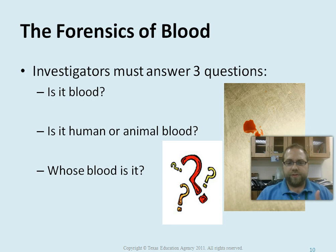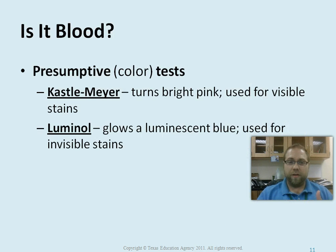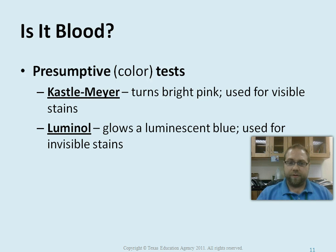For the forensics of blood, there are three questions to answer: Is it blood? Is it human or animal blood? And whose blood is it? For the first question, there are two tests. The Kastle-Meyer test will turn blood bright pink and is used for visible stains that you can actually see. Luminol glows a fluorescent blue when sprayed on something; it's used for invisible stains — blood that has been cleaned up, even years past — to determine whether blood was present.